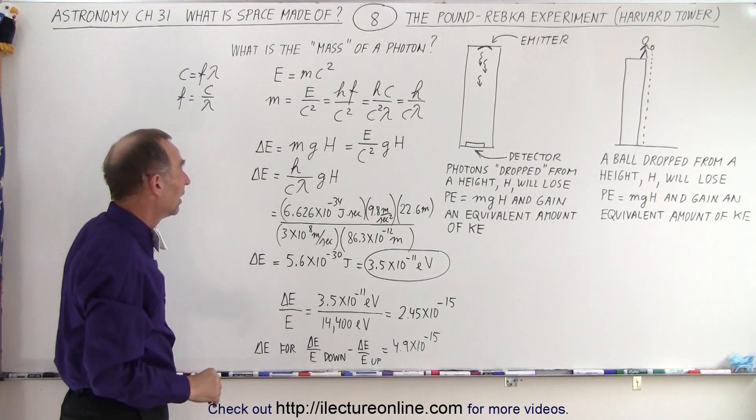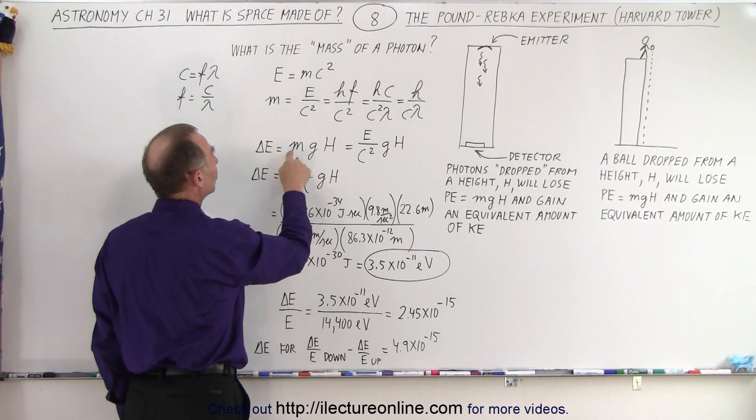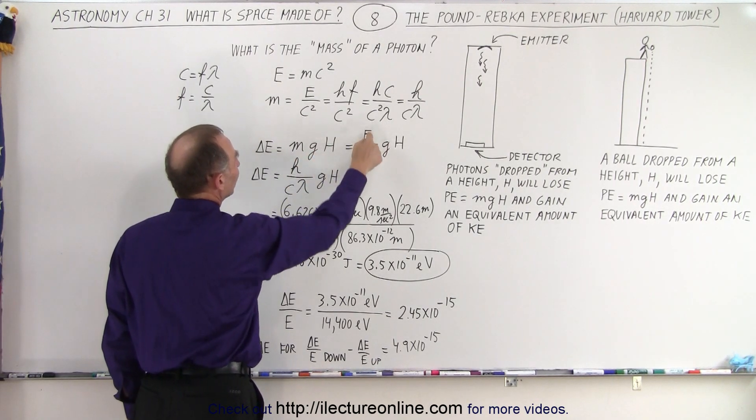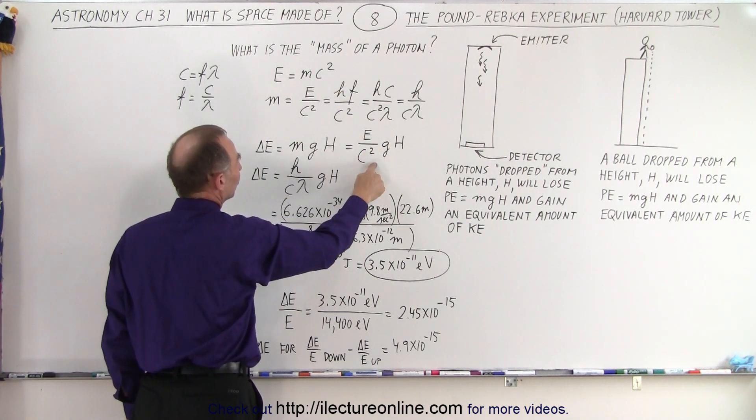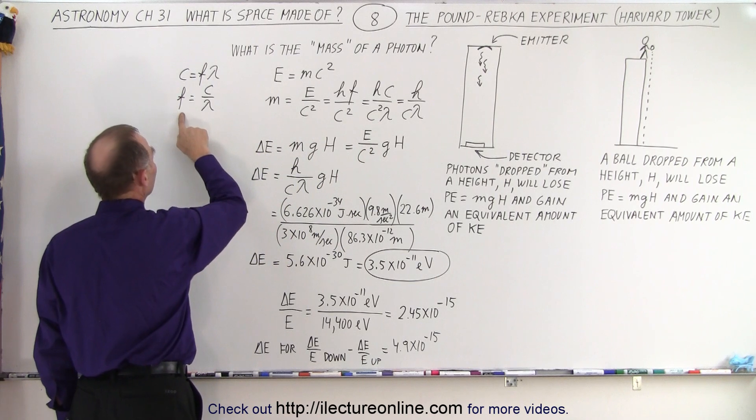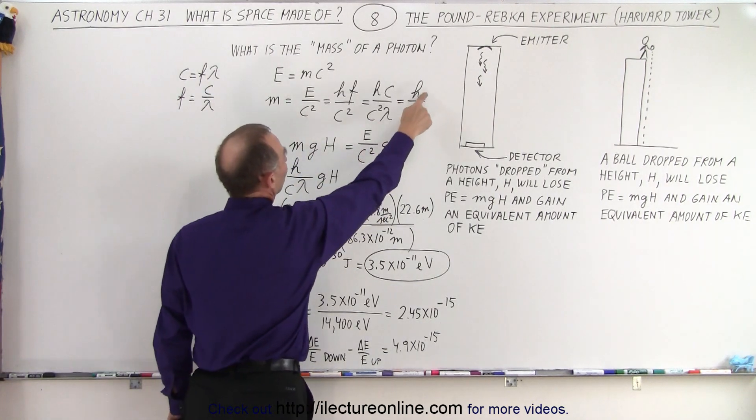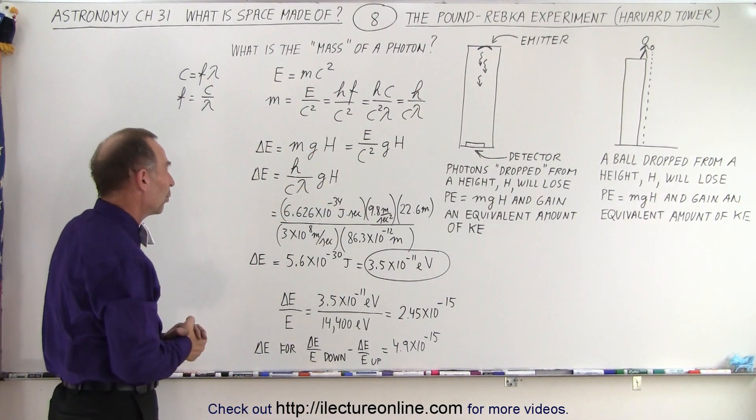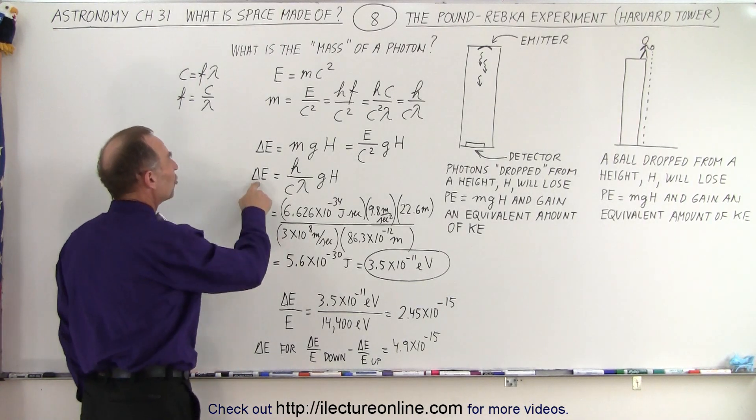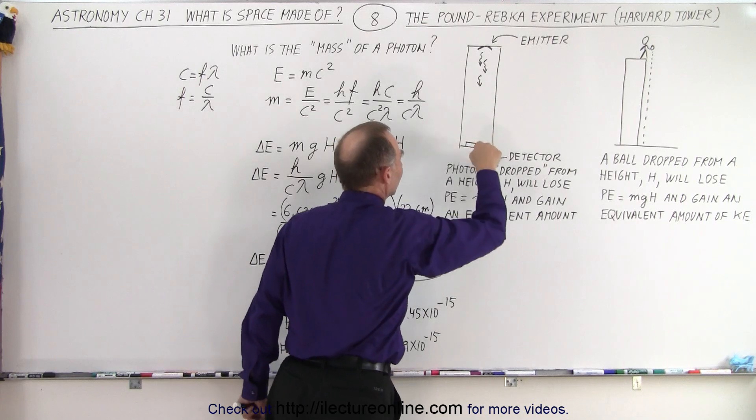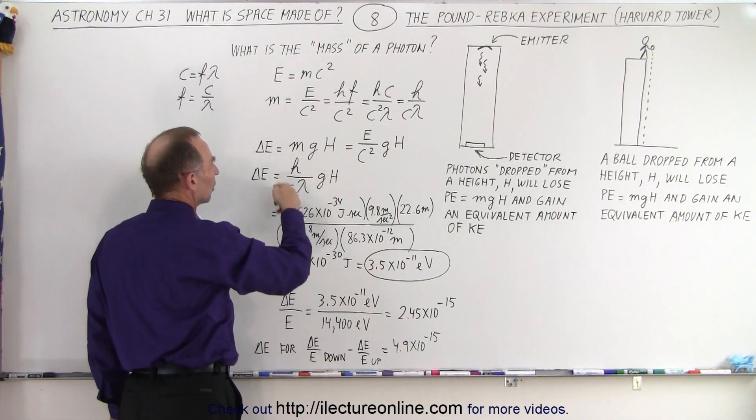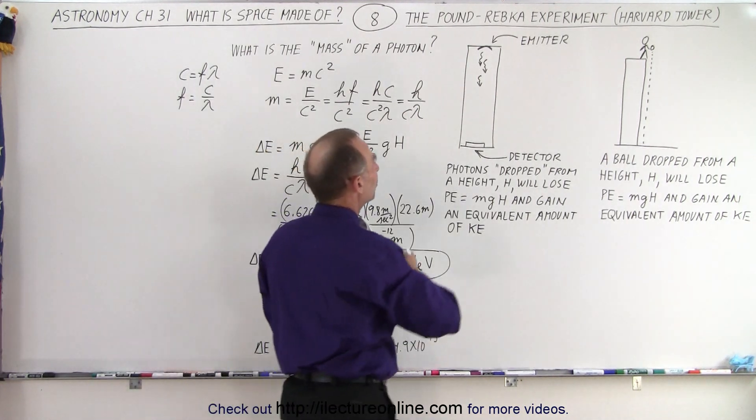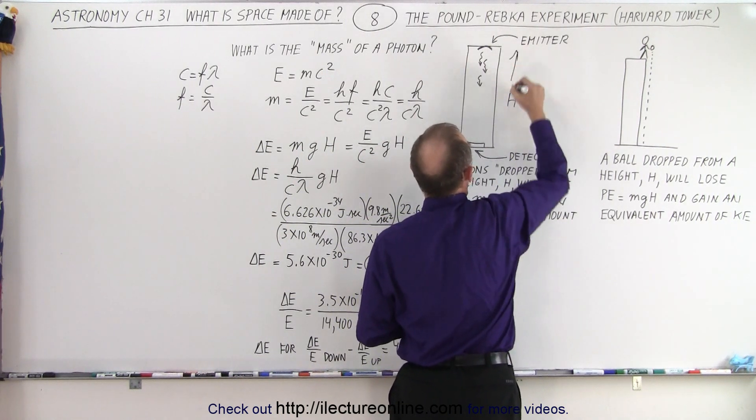Then if you think of the change in energy as being equal to mgh, the equivalent mass times g times h, you can take the energy divided by c squared or hf divided by c squared. Or if you want to convert from frequency to the speed of light divided by the wavelength, you can write it as Planck's constant divided by c divided by lambda. So then you can say that the change in the energy of the photon falling from a height of 22.6 meters is equal to the mass times the acceleration due to gravity times the height.